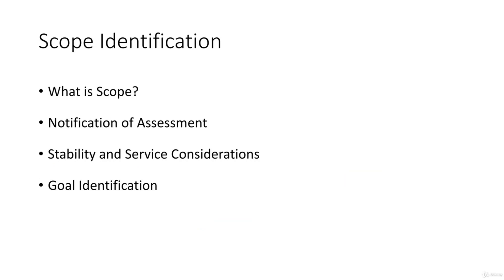Scope identification — so what is scope? In a nutshell, scope is being able to understand the wide variety of options that could go into place with an engagement. This includes goal identification — knowing what the end goal is — whether you need to notify anybody that the test is about to occur, and any stability or service considerations. For example, if you have a Java service that is specifically finicky about receiving a lot of traffic, that's something you'd want to take into consideration. This is more of the paperwork side of things — there needs to be a paper trail around your assessments. Think of this as your get-out-of-jail-free card if you're a freelancer or a consultant.